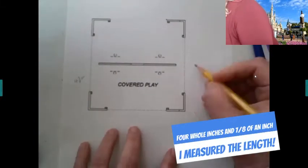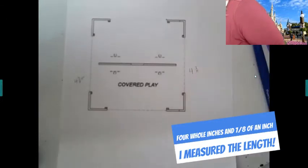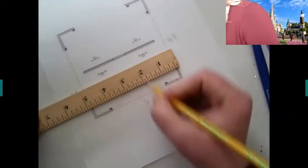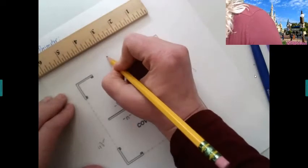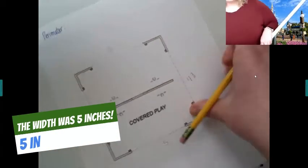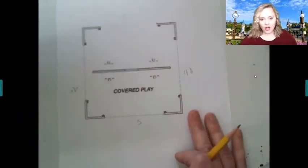And that means because opposite sides are the same, that this side is also four and seven eighths. All right, there we go. This is five and this is five, so it's really close to a perfect square but just a little bit off.